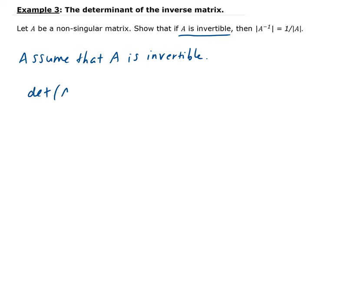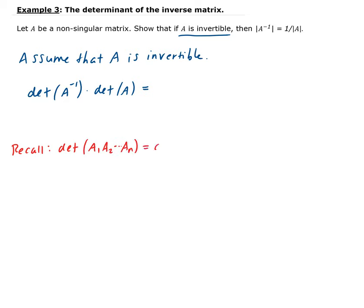So if we have the determinant of A inverse times the determinant of A, this can be written using the property: the determinant of A₁·A₂·...·Aₙ is the same as det(A₁) times det(A₂) times ... times det(Aₙ). We can use this property now.